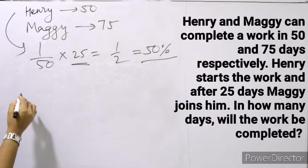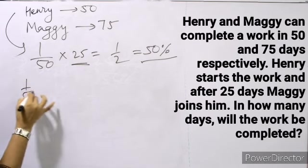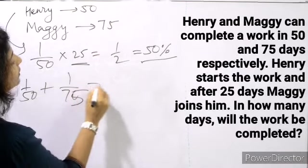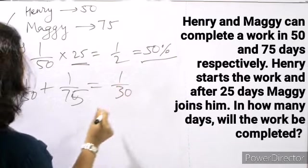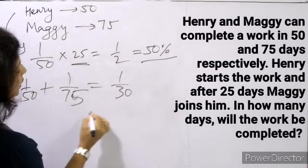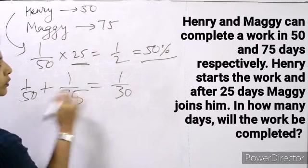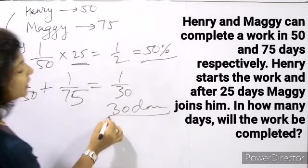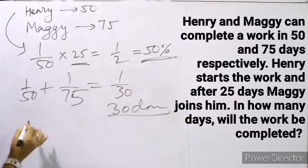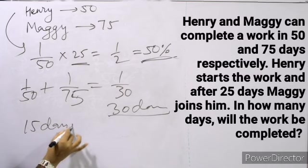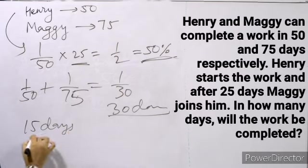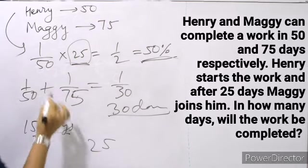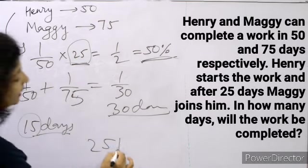Maggie joins him and both start working together. Their combined rate is 1 by 50 plus 1 by 75, which equals 1 by 30. So together they take 30 days to finish the full work. But since half the work is already done by Henry, they only need 15 more days together. Total: Henry worked 25 days plus 15 days together equals 40 days.